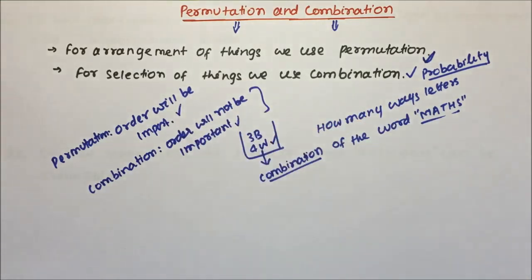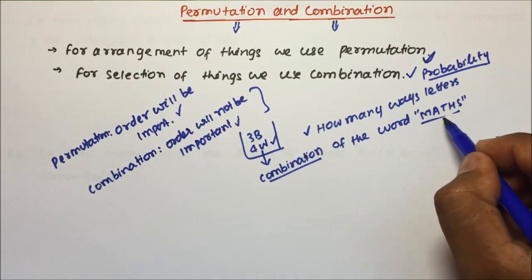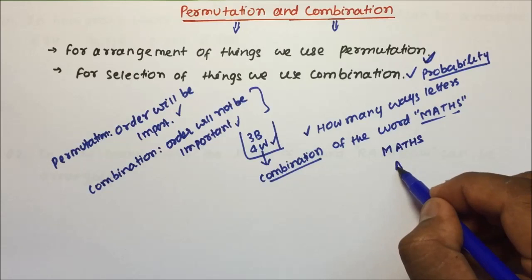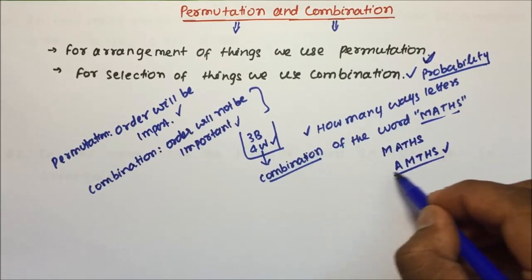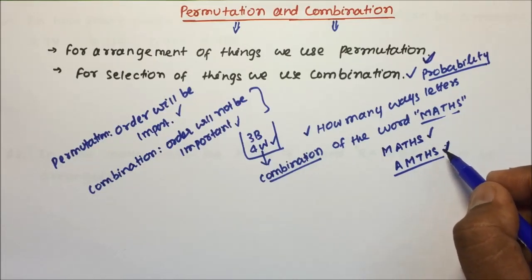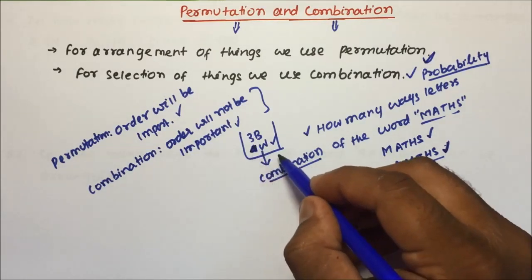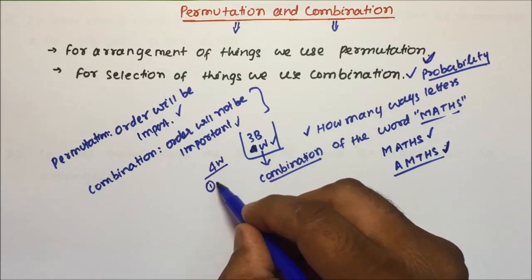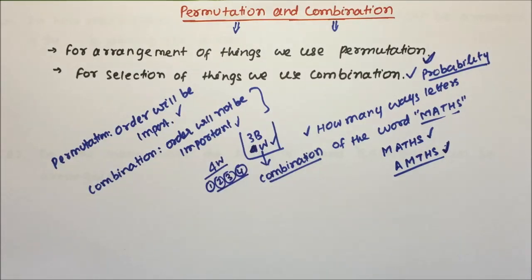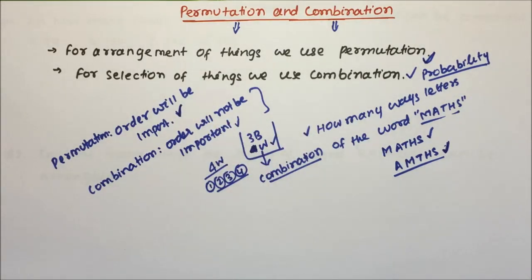Now, how order will be important and how order will not be important — let us understand. If they ask how many ways the letters of the word MATHS can be arranged, if you write A first and then M-T-H-S, the word's meaning changes. This is MATHS, but AMTHS does not have any meaning. So order is important in permutation. In combination, you are selecting — four white balls are there, and whether you select the first, second, third, or fourth white ball does not matter. That is why in combination, order will not be important.